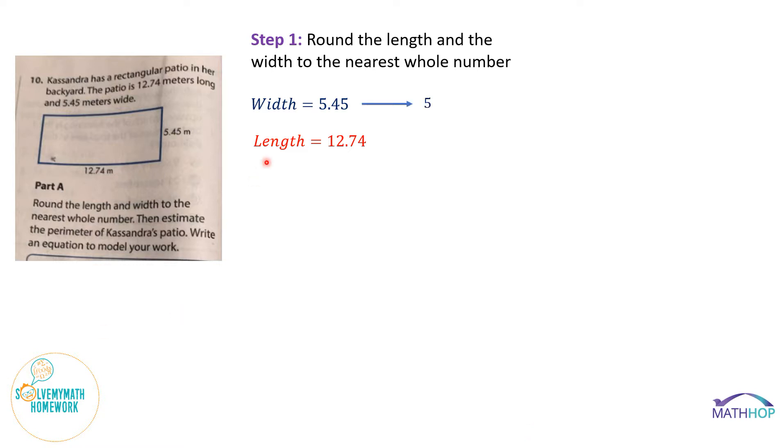Let's do the same with length. 12.74. So that's 74 hundredths. But remember, I only have to concern myself with this very first decimal place. If this 0.7 is five or greater, we round up. Seven is greater than five. We're going to round 12.74 up to the nearest whole number and that will be 13. So now we're working with a width of five meters and a length of 13 meters. We won't be calculating with any decimals whatsoever. That's the first step.